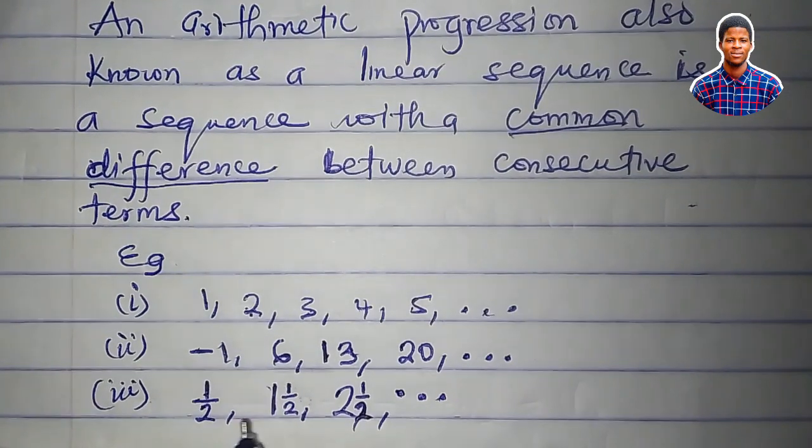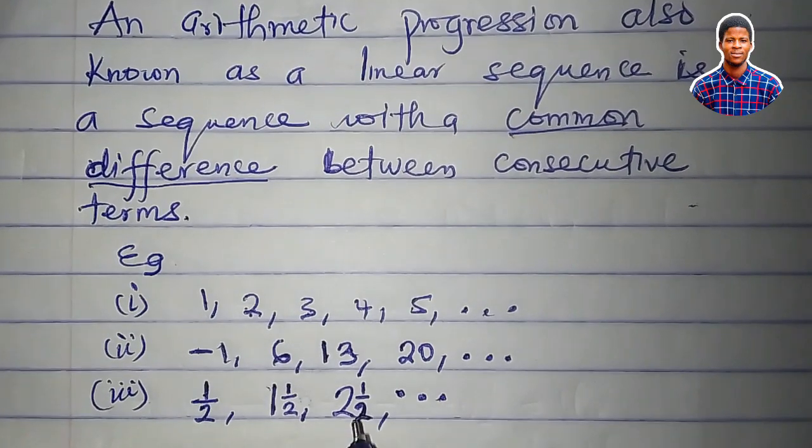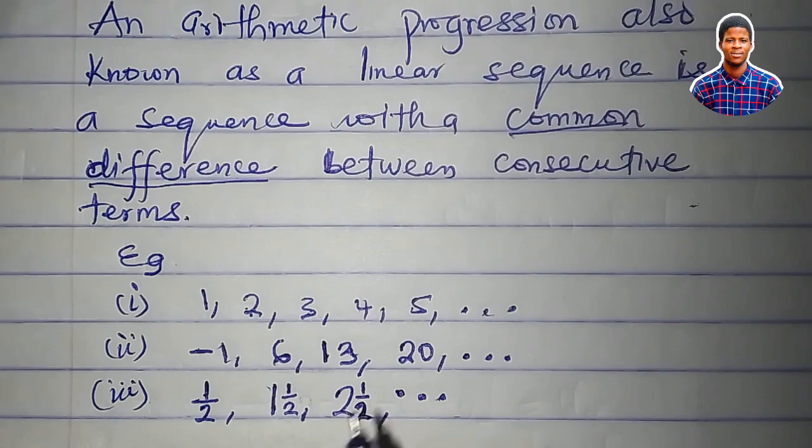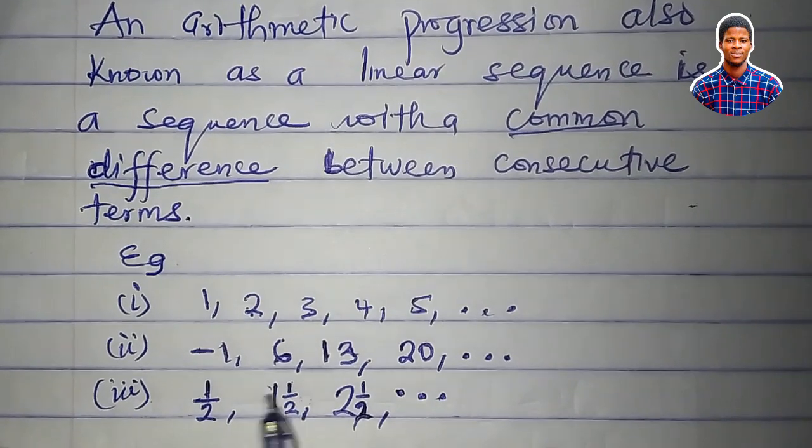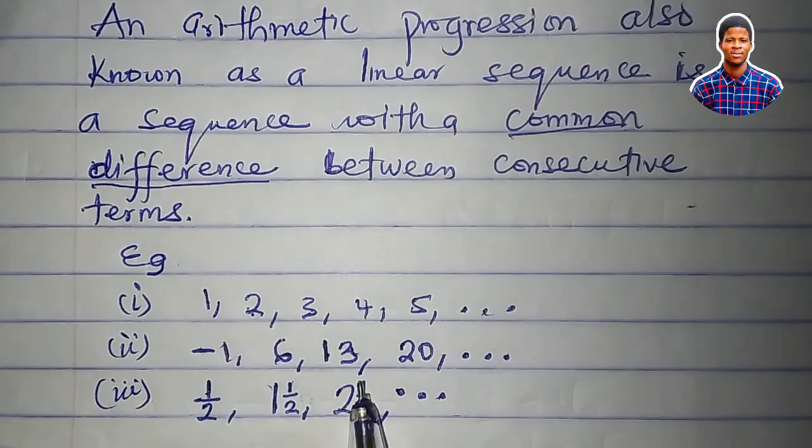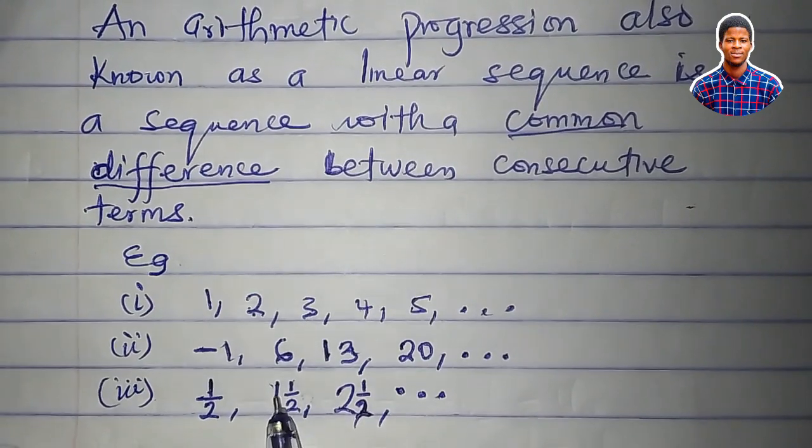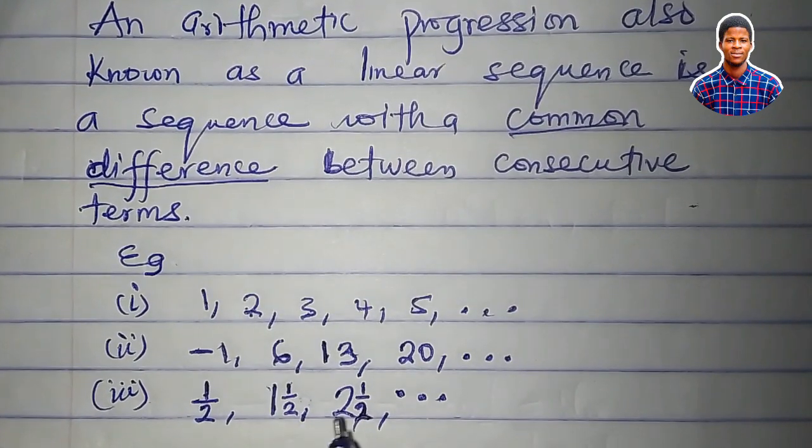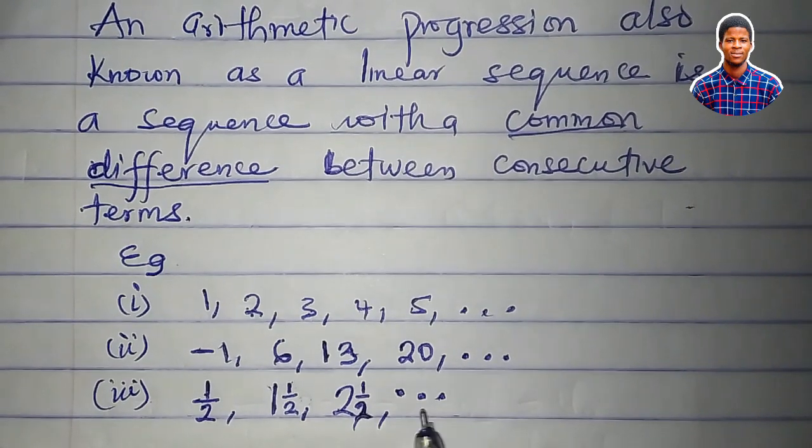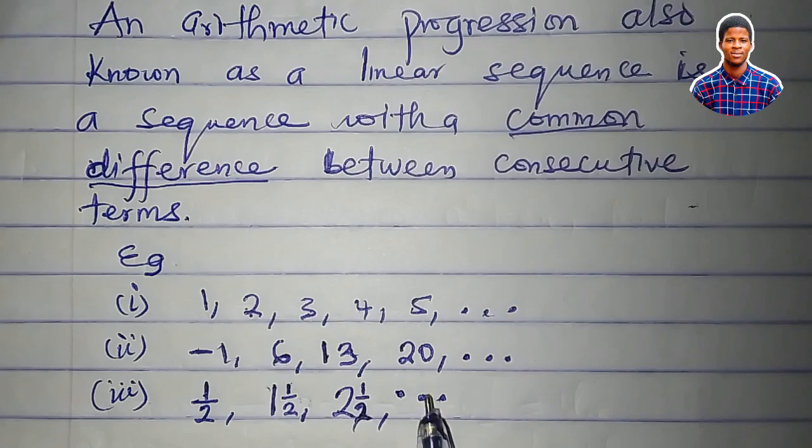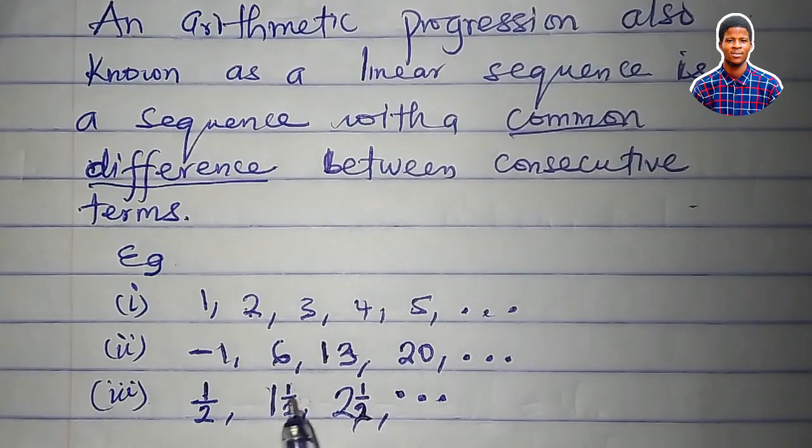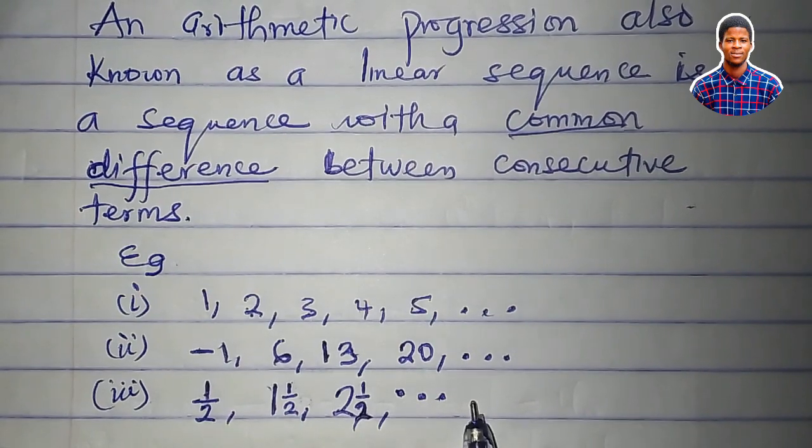We have one-half, one and one-half, two and one-half. What is the common difference in this sequence? One and one-half minus one-half is one. Two and one-half minus one and one-half is still one. You can say that the next term will be three and one-half because three and one-half minus two and one-half is one. The common difference for this sequence is one.